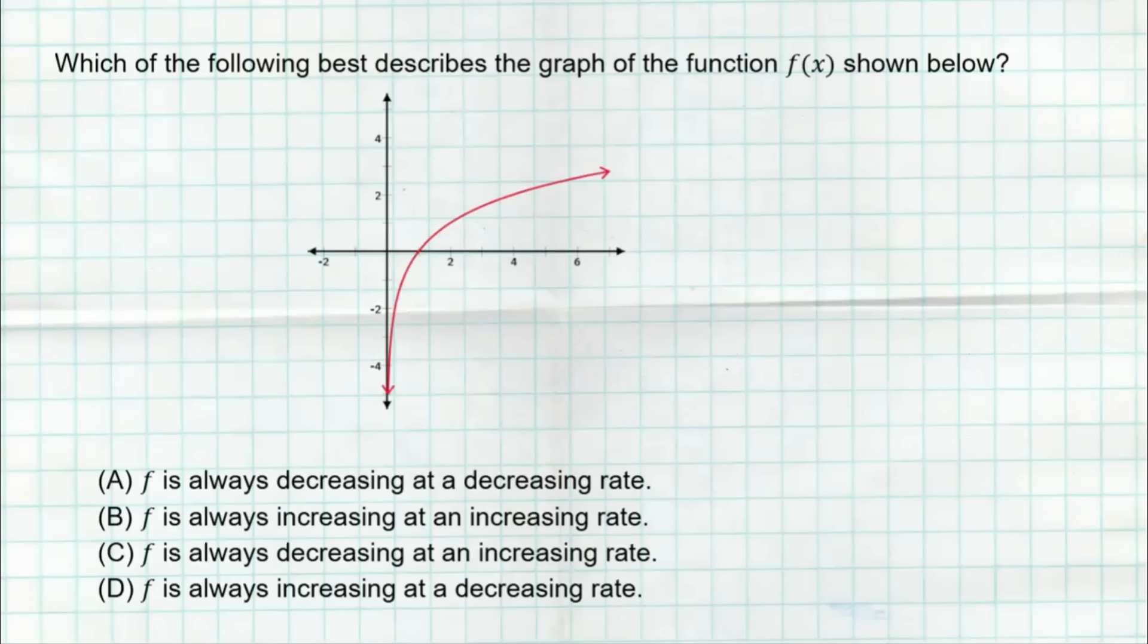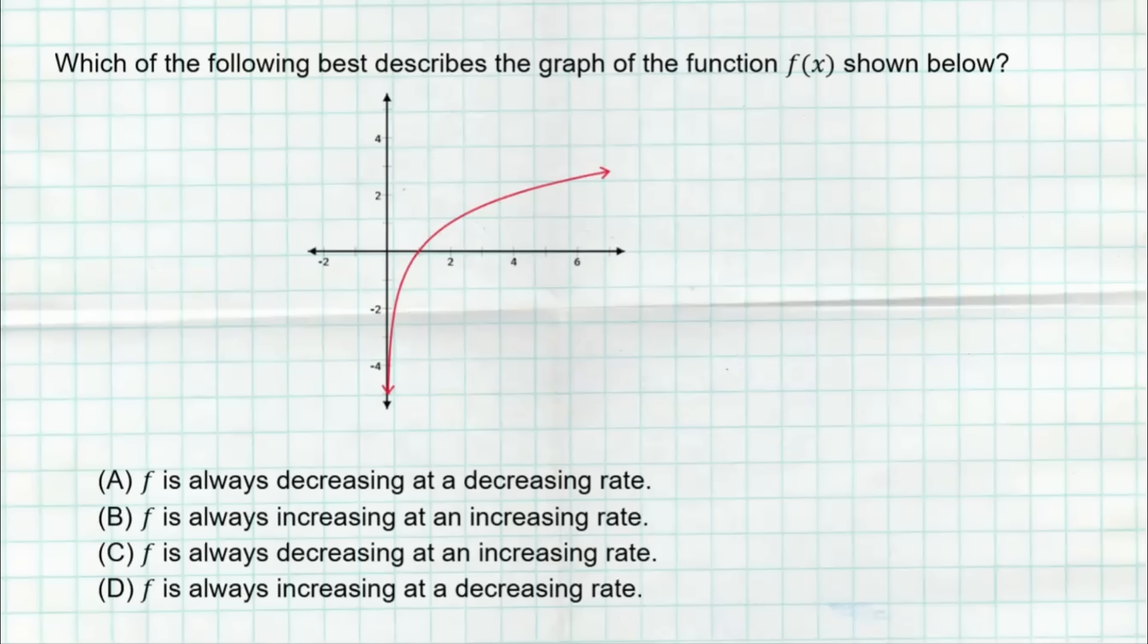Question number two, here it is. And the correct answer is D. F is always increasing at a decreasing rate. We clearly see from left to right the values are going up. It's pretty obvious that the function values are increasing, but notice how the graph is concave down. That means the rate of change is decreasing. In the very beginning, we're getting big very quickly. Look how fast that rate of change is. And then it starts to slow down. As the graph continues, the rate of change starts to slow down, and that's because the graph is concave down. So D is the correct answer.